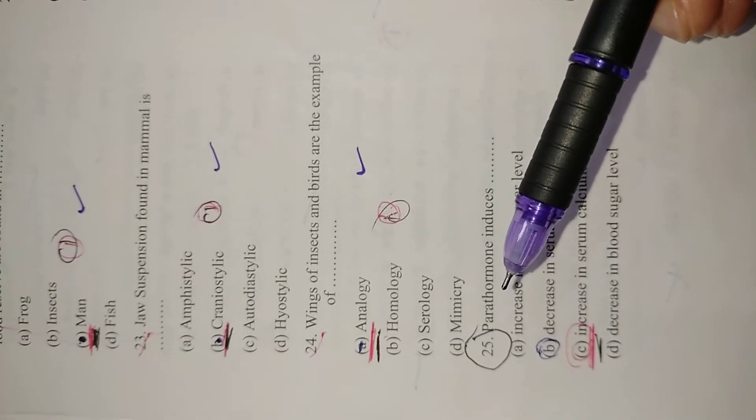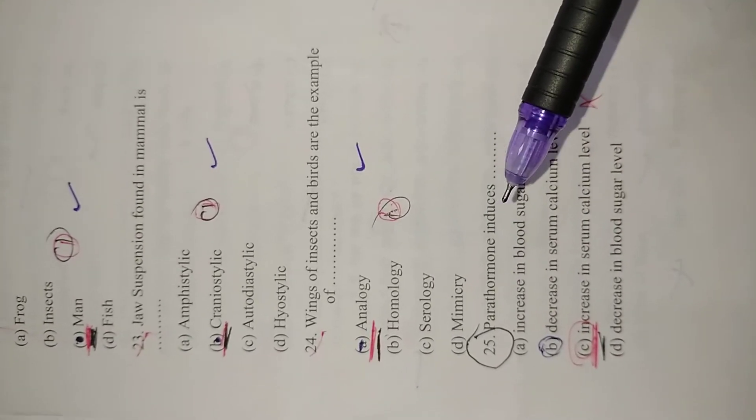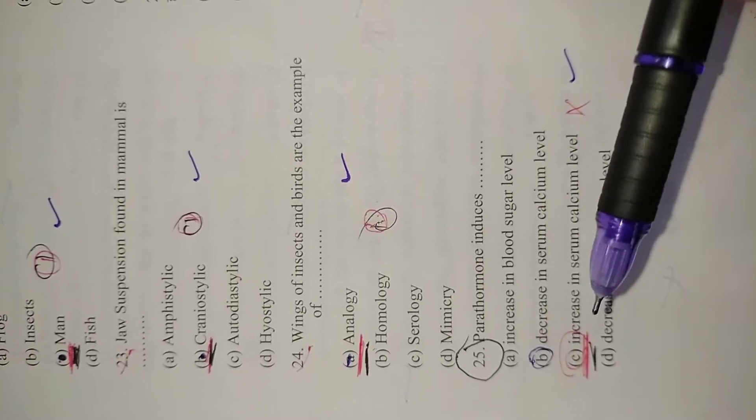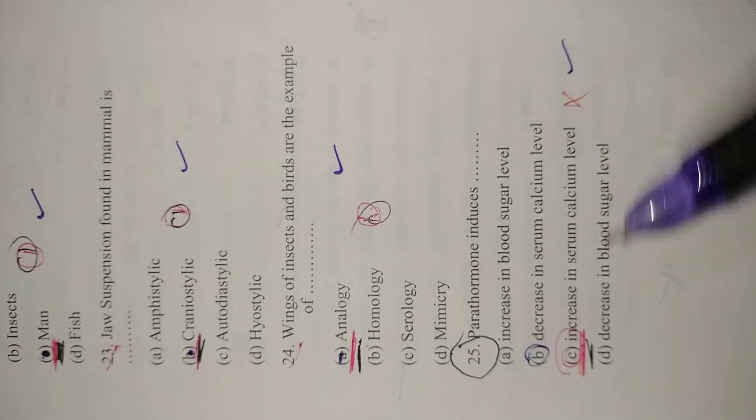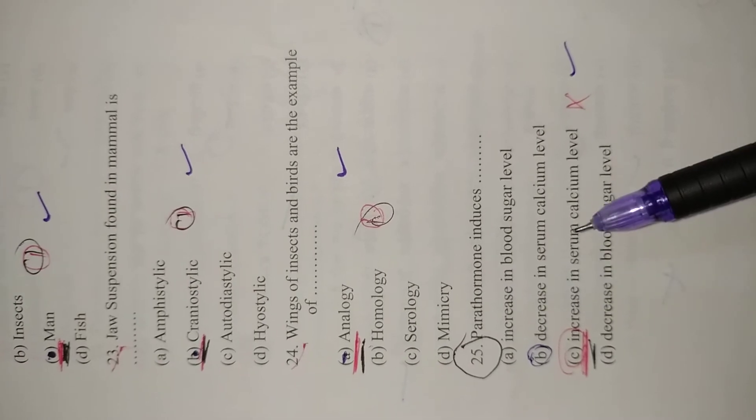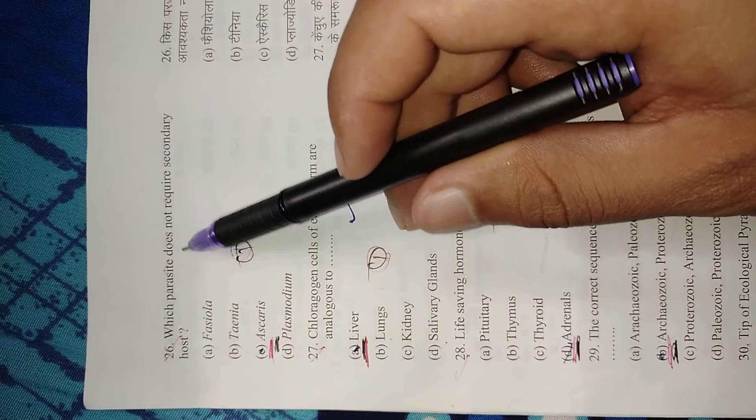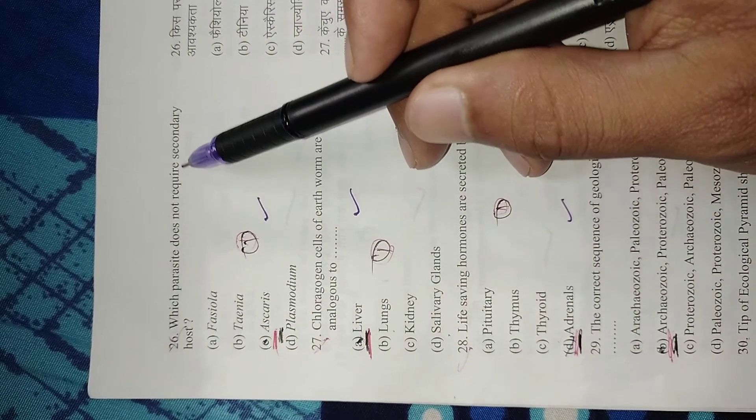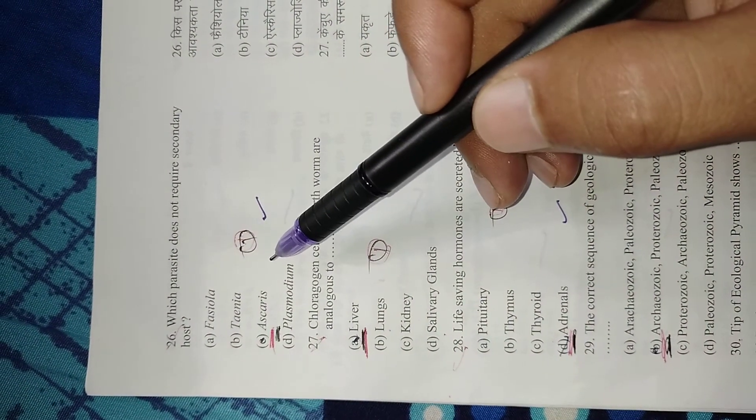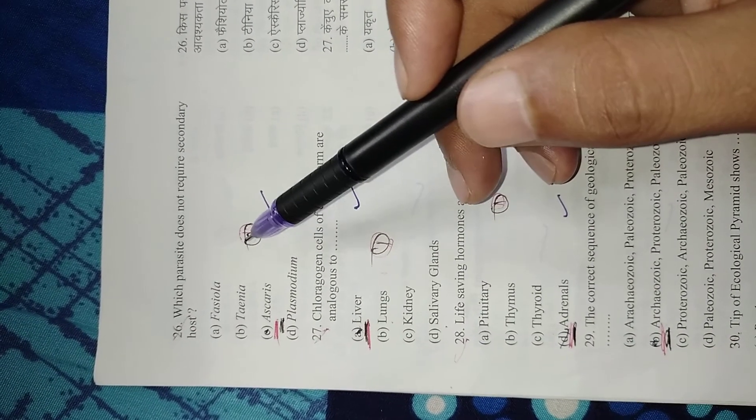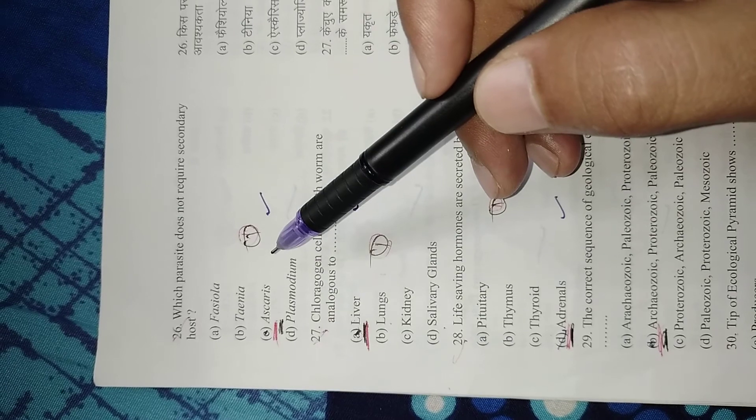Question 25: Parathormone induces increase in serum calcium level. Right option is C, increase in serum calcium level. Question 26: Which parasite does not require secondary host? The right option is C, Ascaris. It doesn't require a secondary host, while all the others require secondary host to complete their life cycle.